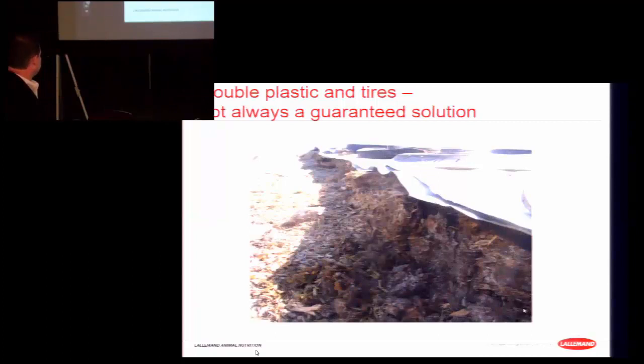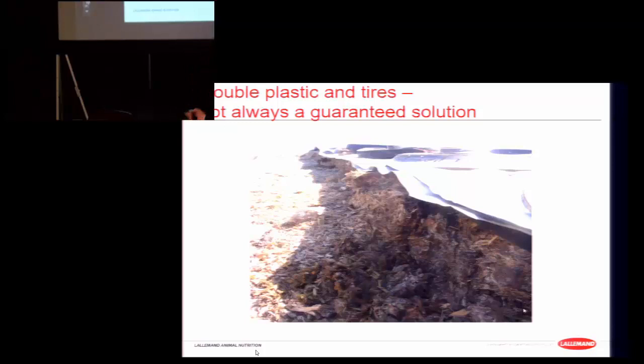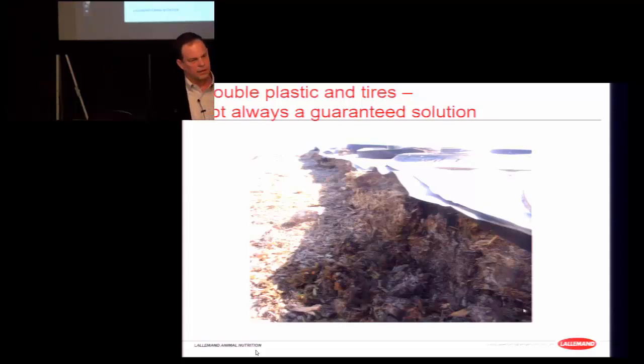In a corn silage example covered with two sheets of plastic that also had some splits, they were still removing almost a foot of crust. Even with double plastic, if some oxygen was trapped or channeled during packing, it leads to spoilage and microbial activity.